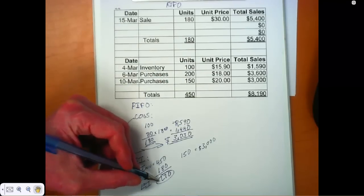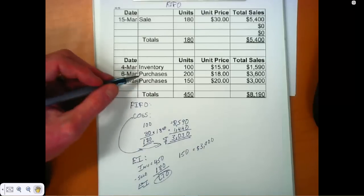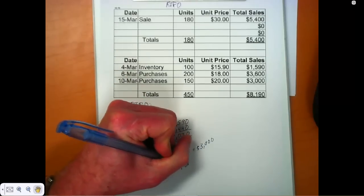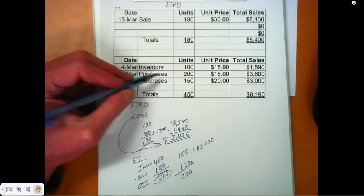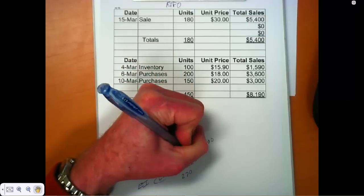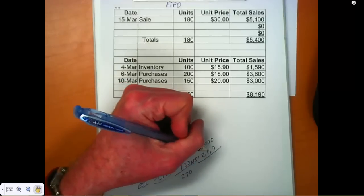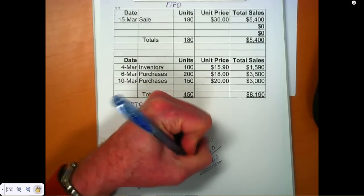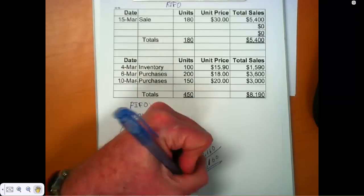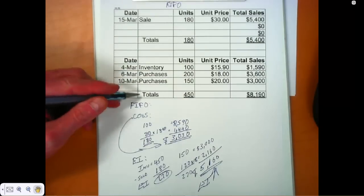We need an additional 120 units, so we need another 120 units from the March 6th layer. These are $18 units, so 120 times $18 equals $2,160. That means ending inventory is valued at $5,160. Those are the values we have under FIFO.